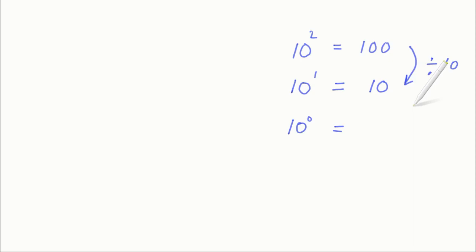So 10 squared, which is 100, when you divide 100 by 10, equals 10. Each time the power decreases by 1, we're dividing by 10. 10 divided by 10 is 1. Decreasing the power one more time, it becomes 10 to the minus 1, and 1 divided by 10 you can write as 1 over 10.